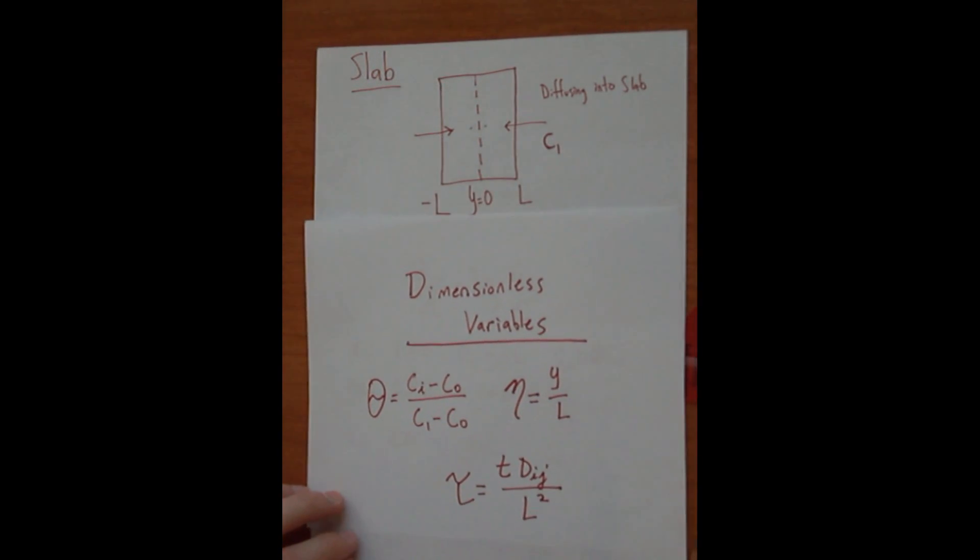So these variables, theta again is the dimensionless concentration, and that's represented by Ci, which is your unknown concentration, minus the initial concentration in the slab C0, divided by C1, which is the bulk concentration around the slab, minus C0.